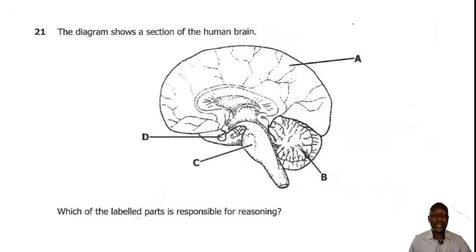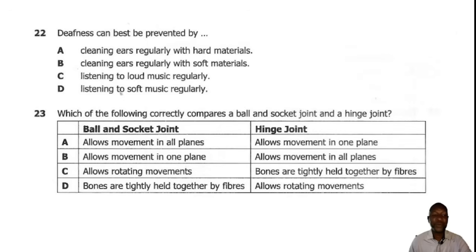Question 21. The diagram shows a section of the human brain labeled A, B, C and D. Which of the labeled parts is responsible for reasoning? Reasoning is done by the cerebrum, which is part A. Question 22. The best method of preventing deafness is to clean the ears regularly with soft materials. So the correct answer is B.